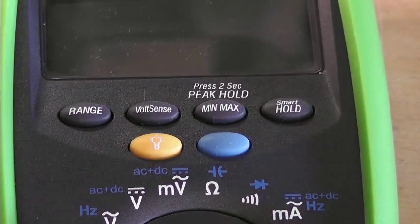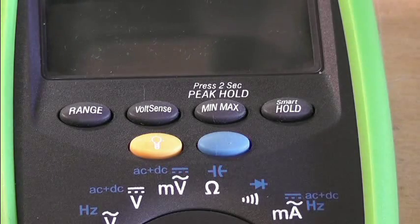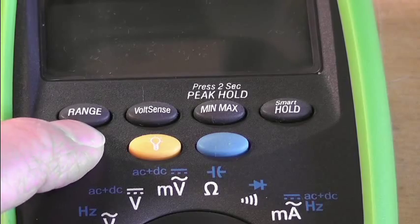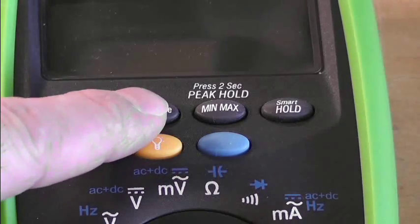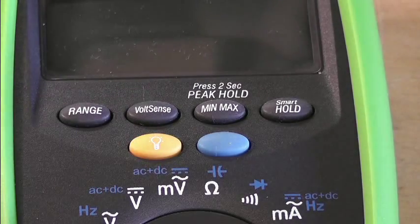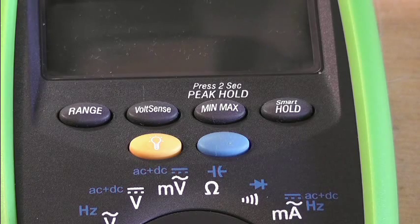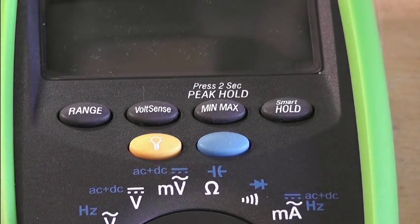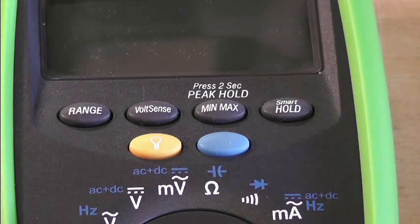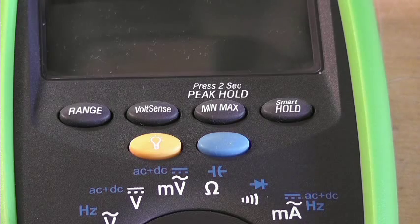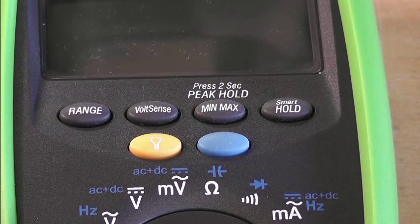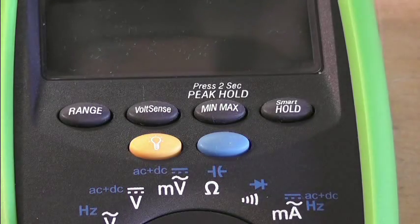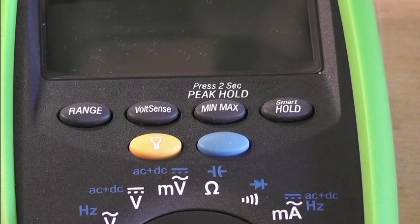I've got no probes connected but just to show you what it looks like. So you've also got these four buttons at the top. The range one lets you specify the range. Generally it will be auto ranging but that lets you have more manual control. Volt sense enables the meter to sense when there's a high voltage nearby. Min max will record the maximum and minimum values during a particular measurement period. And you've got a smart hold button that enables you to hold the current reading.